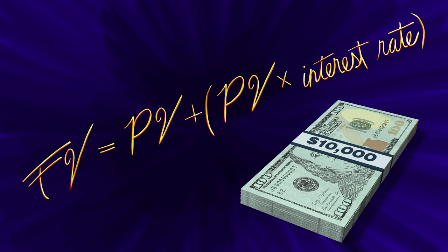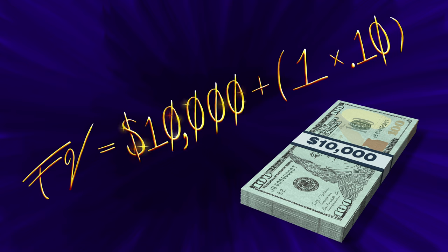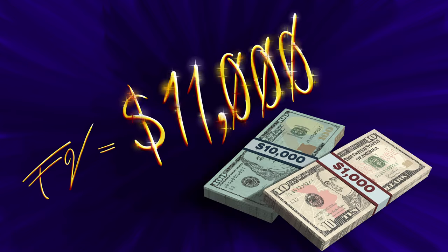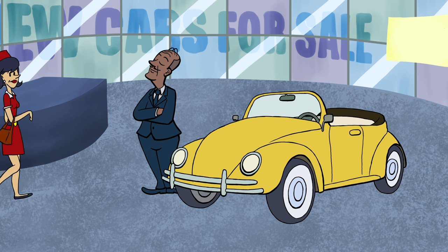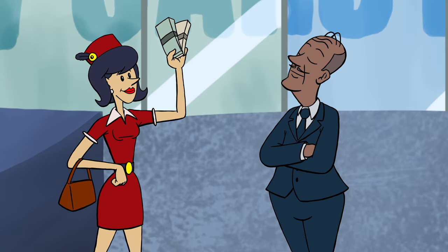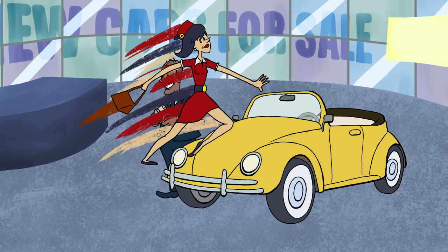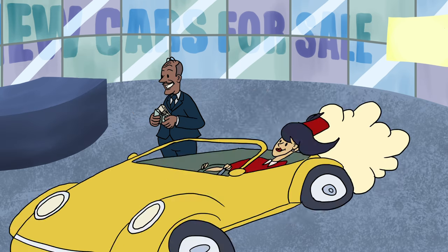With a little bit of rearranging, we can figure out the future value of Sheila's money with this equation. In a year, the future value will be $11,000. It's been a year, and there's Sheila with enough money to buy the car. Sheila really understands the future value of money.